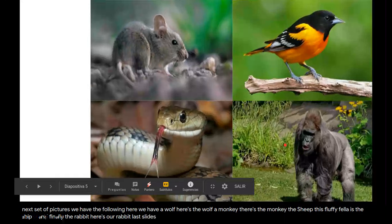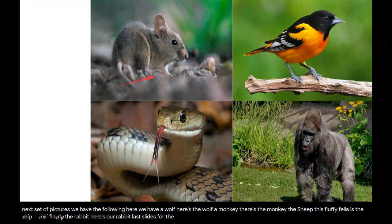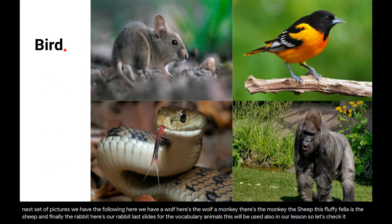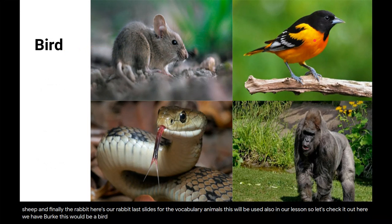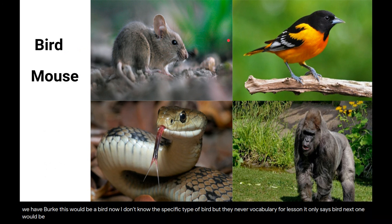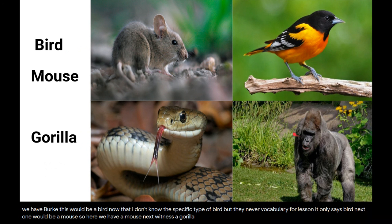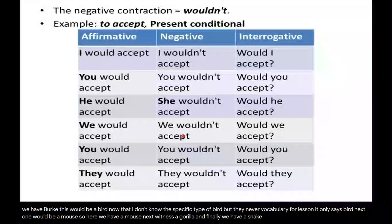Last slides for the vocabulary animals — this will be used also in our lesson, so let's check it. Here we have a 'bird' — I don't know the specific type, but the vocabulary for the lesson only says 'bird.' Next one would be a 'mouse.' Next is a 'gorilla,' and finally we have a 'snake.'